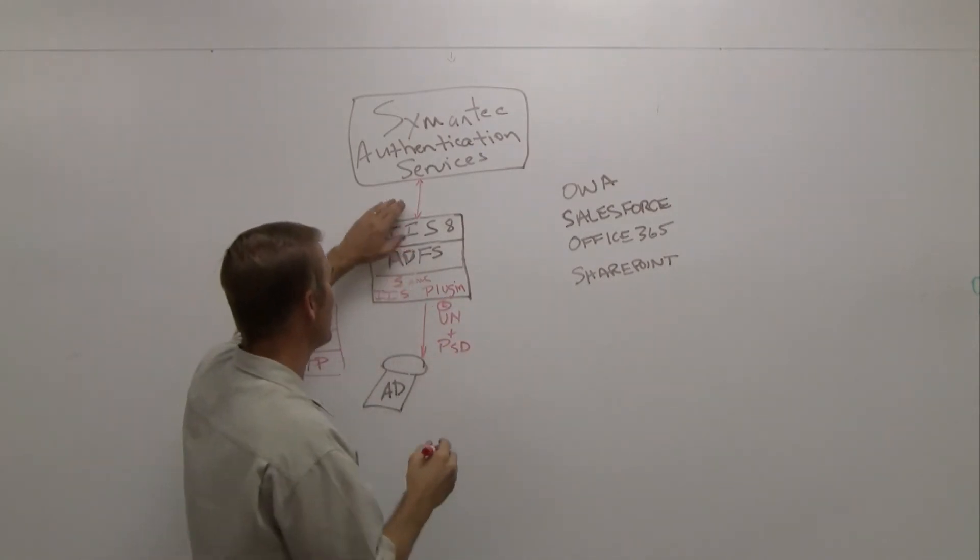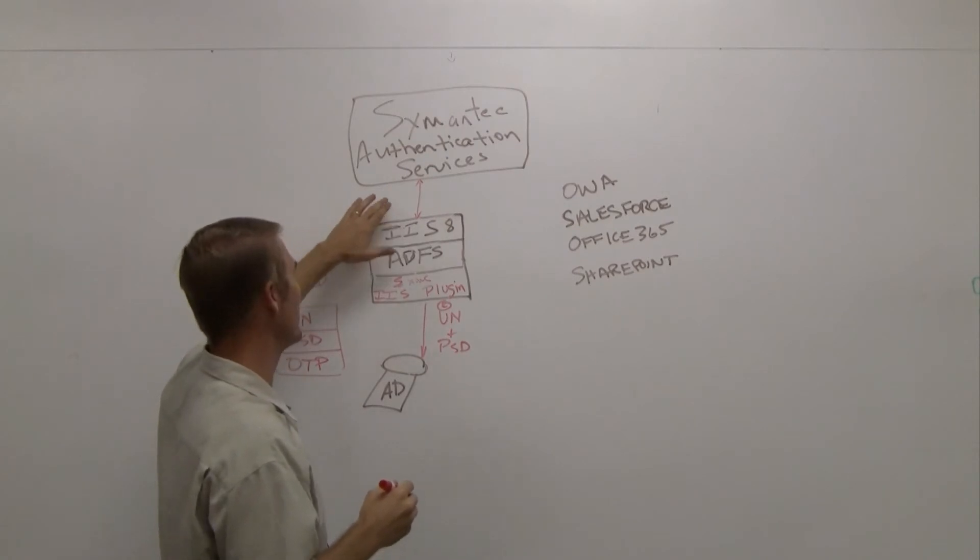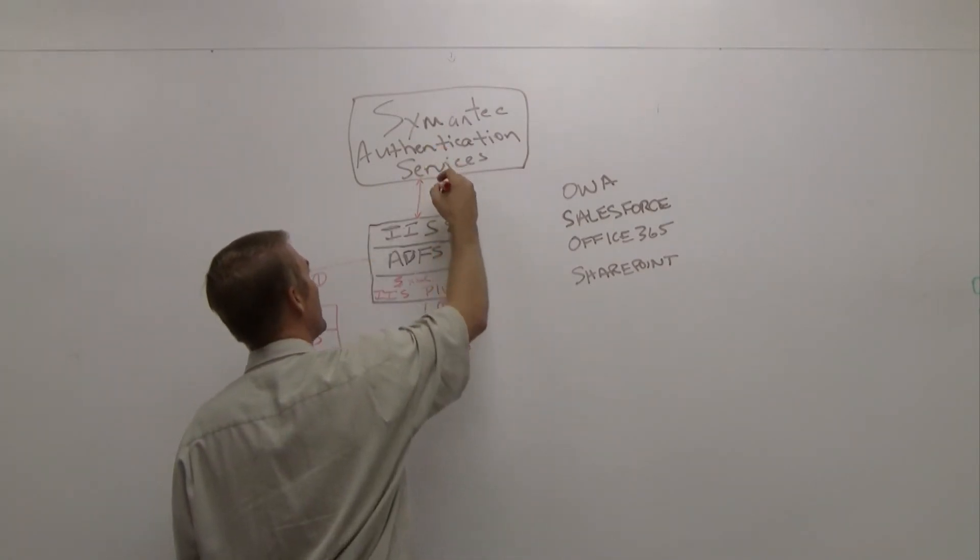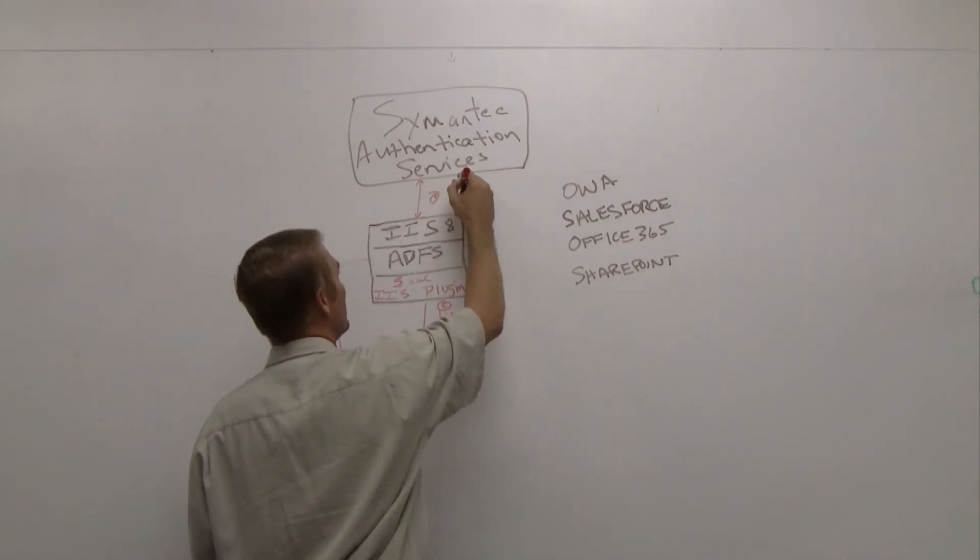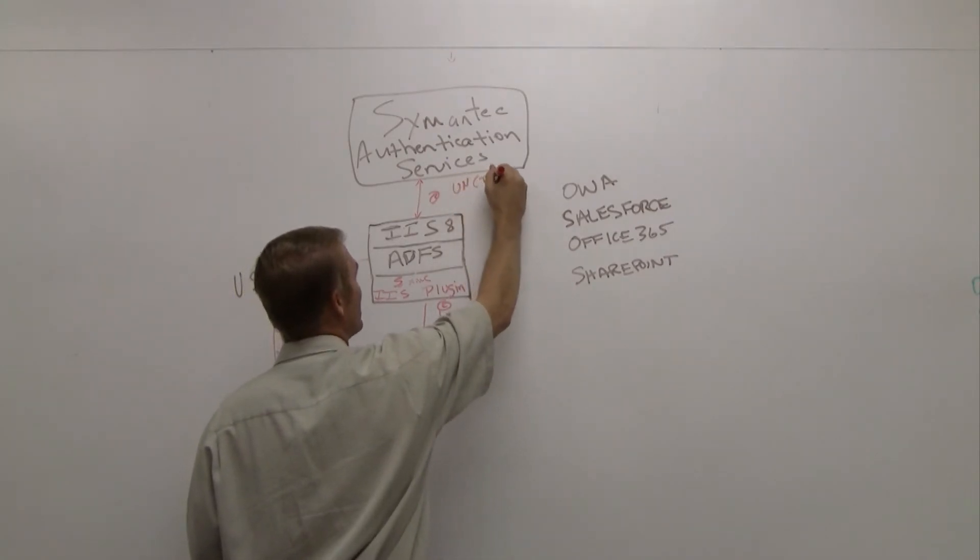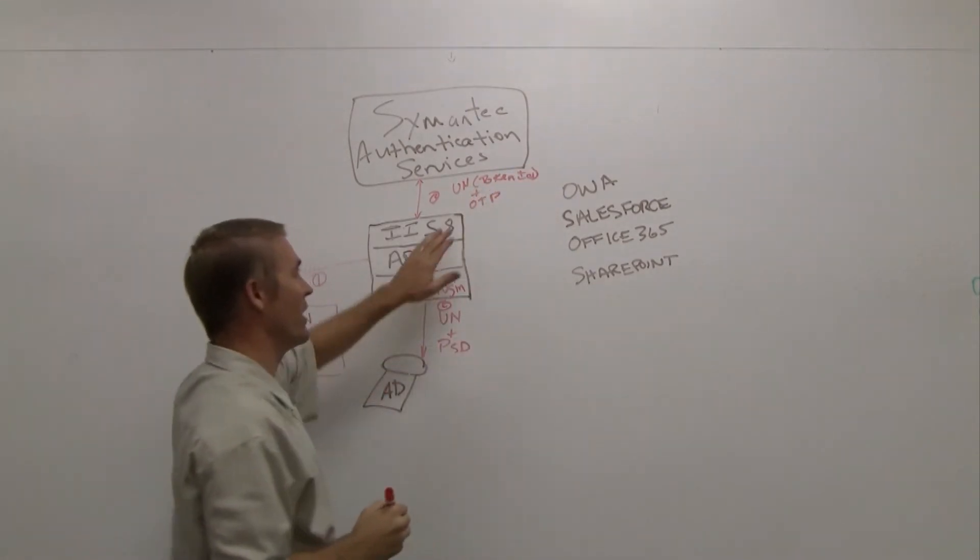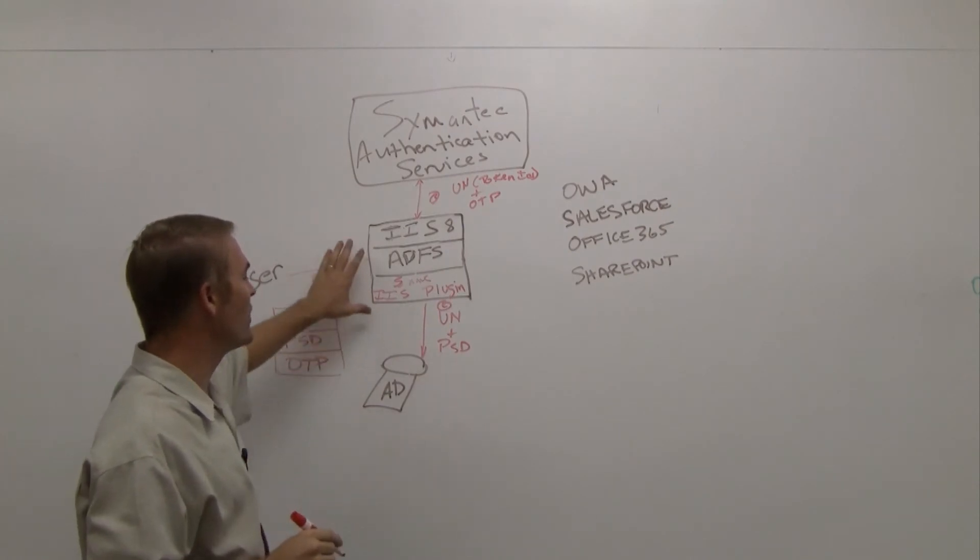And then step three is that through our plugin, we make a call out to the Symantec authentication services and validate the username and map that against a token ID and verify that they provided the correct one-time password.